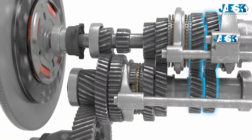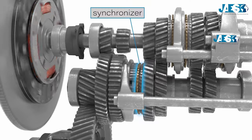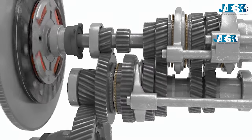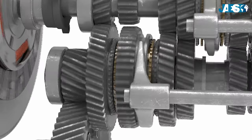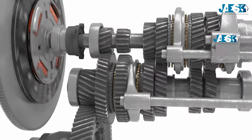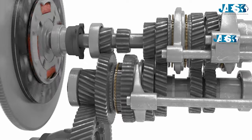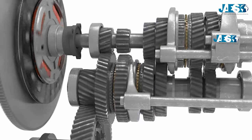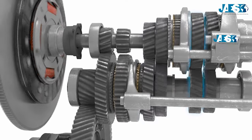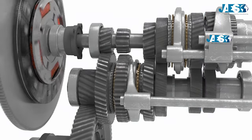In order to change gear while driving, the free gear of each pair is equipped with a synchronizer that allows the primary shaft to synchronize its speed with the gear. With that in mind, we can now shift into second gear, third gear, fourth gear, and fifth gear.